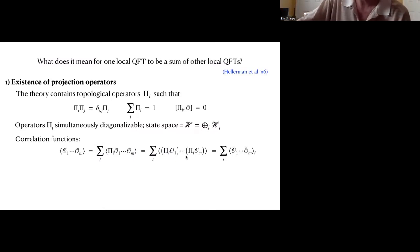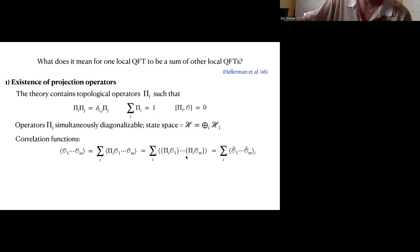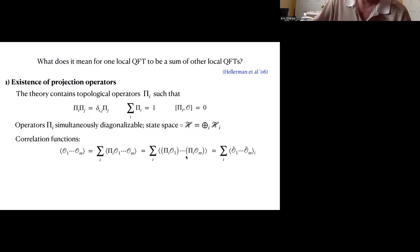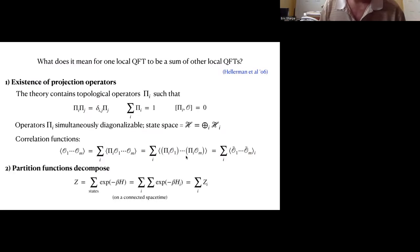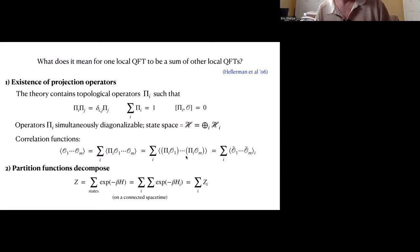Here's the quick formal argument for that. I start with any correlation function in the original theory. I then insert the identity using this completeness relation. I then use the fact that these projectors square to themselves and that they are topological to essentially spread them out. I take this one projector, I turn it into several, and I'm multiplying each of those O's, and then the result looks like a sum over constituent universes of correlation functions computed in each universe, where the operators are the projections of the original operators into that constituent universe.